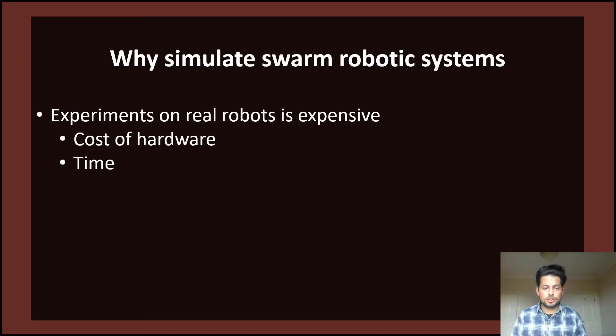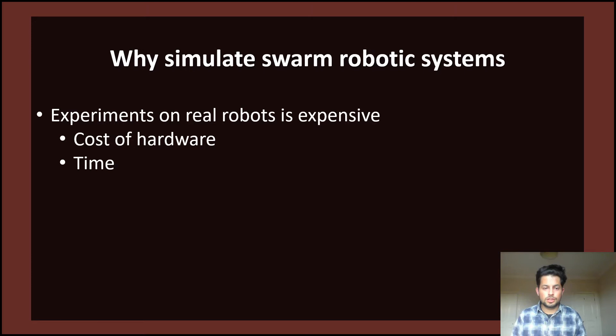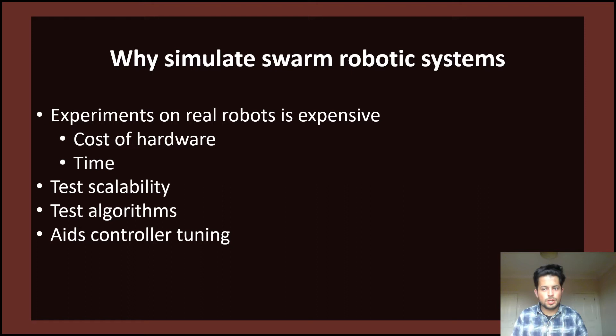Another aspect is the cost of hardware. When we are testing our algorithm, sometimes it might not do what we want, and if we run it directly in hardware there is a high risk that we are going to break the robots because they are doing weird behaviors — crashing against each other or doing something different. In simulators we can see this and prevent these issues, saving cost in hardware.